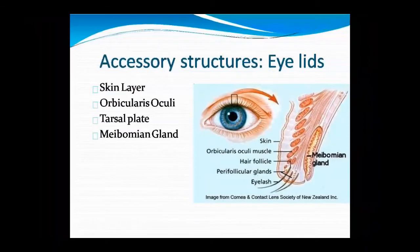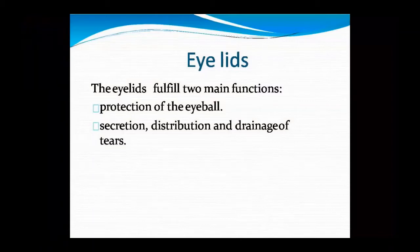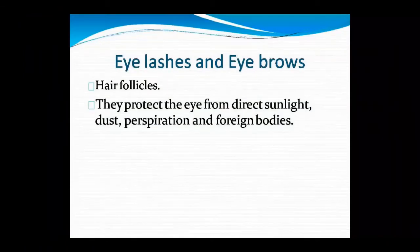This is part of the eyelid. The two main functions of the eyelid are: one, to give protection to the eyeball, and two, to make and distribute tears. So the eyelid is responsible for the secretion, distribution, and drainage of tears.